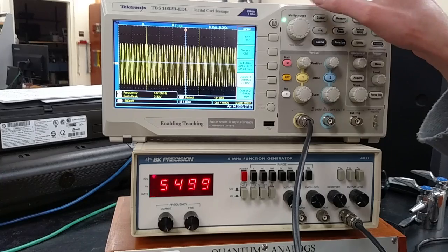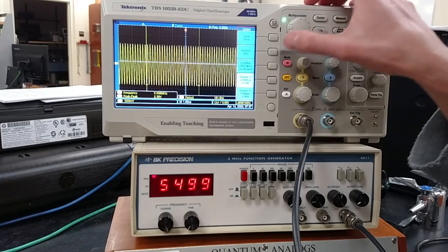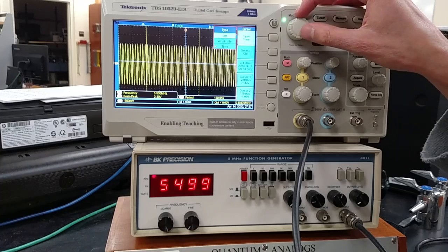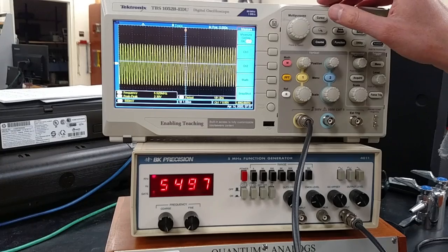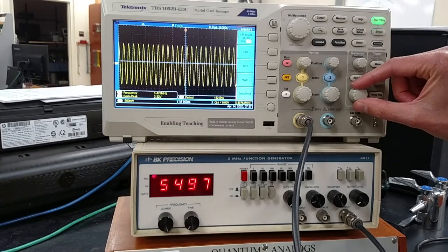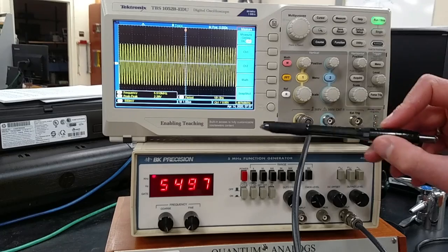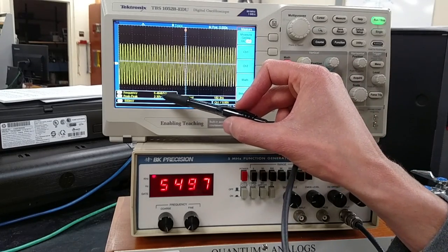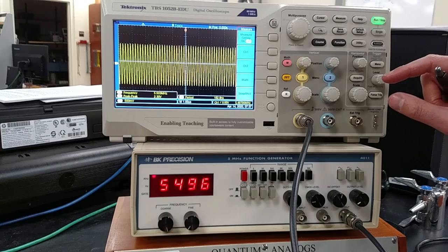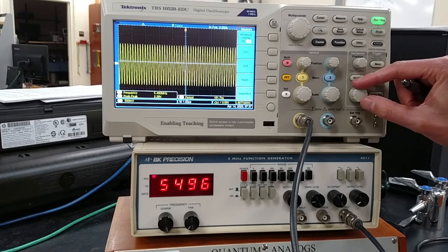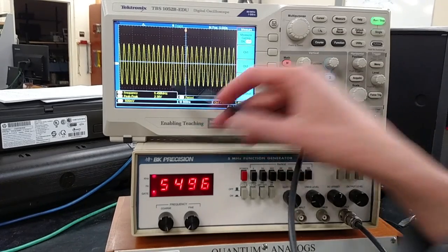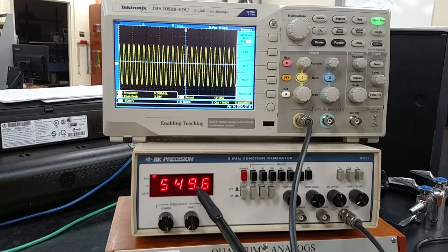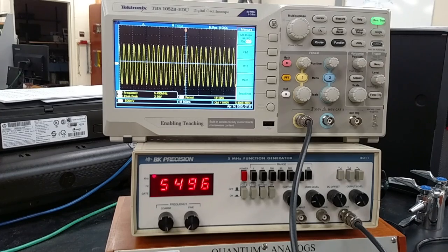We attempt to measure the frequency at 5.5 megahertz to get a better measurement. So 5.55 megahertz and 5.49 megahertz, around 5.5 megahertz also measuring with the function generator. So this is our maximum possible value.